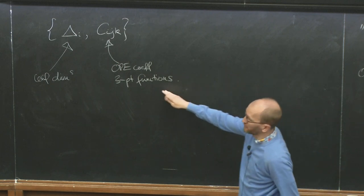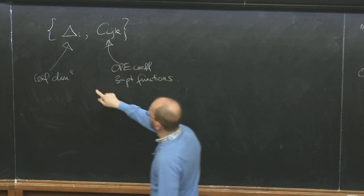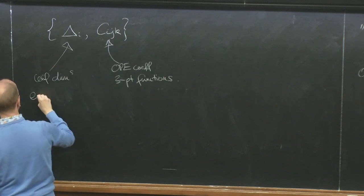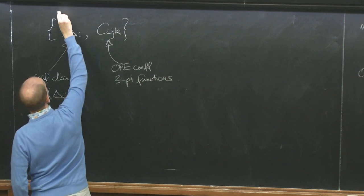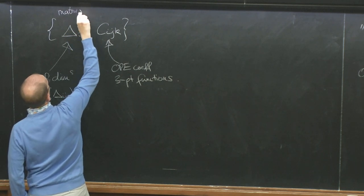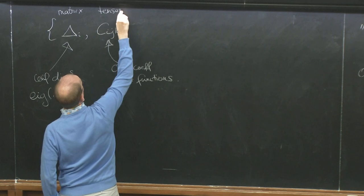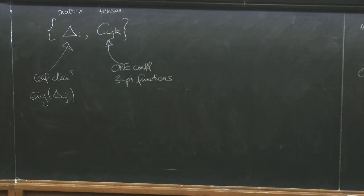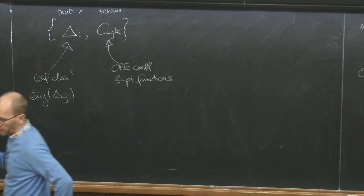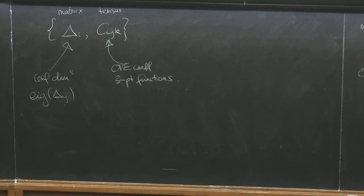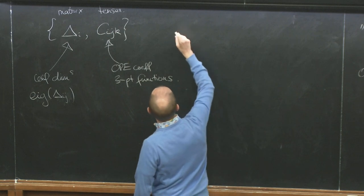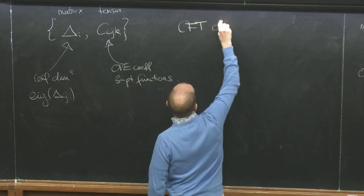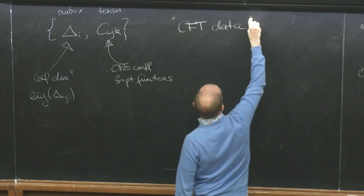By the way, a three-point function defines a triangle. The delta's are the eigenvalues of the dilation operator. What we have is a matrix — the eigenvalues — and a tensor — the OPE coefficients. However, this data doesn't define a good CFT unless it satisfies further constraints. This is what one would refer to as CFT data.